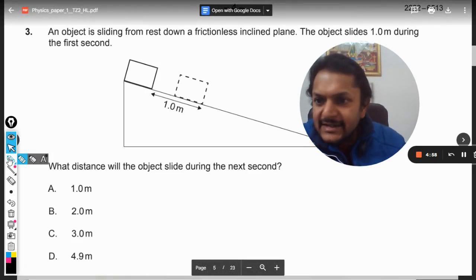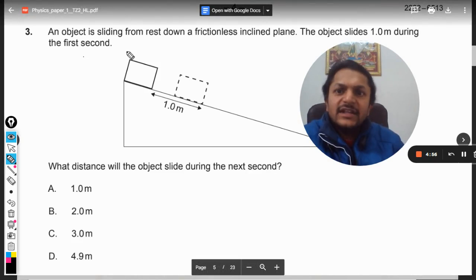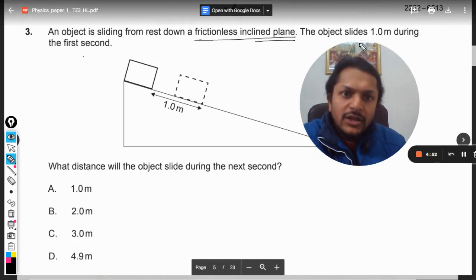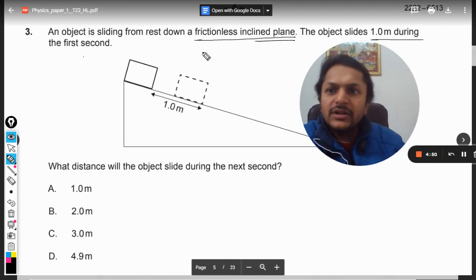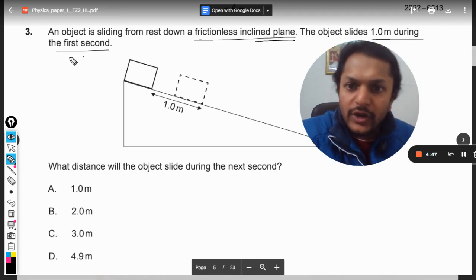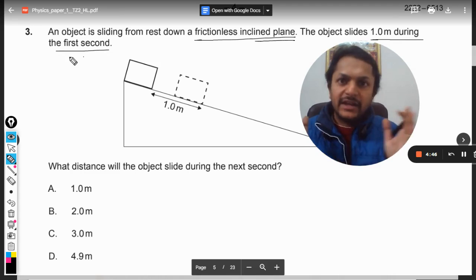Okay students, let us see this question. An object is sliding from rest down a frictionless inclined plane. The object slides one meter during the first second. So there is an object that is sliding down an inclined plane.